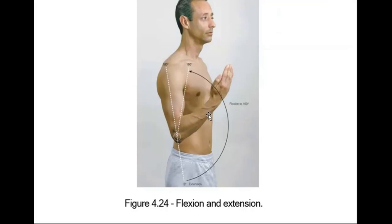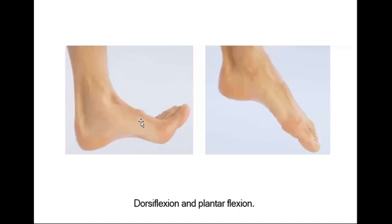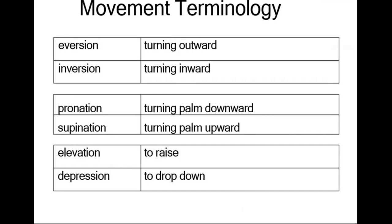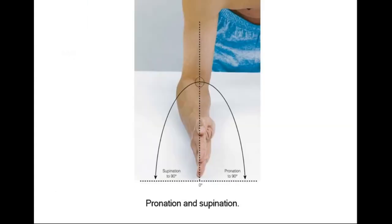For example, at the knee and cubital joint: flexion and extension. Dorsiflexion and plantar flexion in the foot are different — please remember this. Eversion is turning outward; inversion is turning inward. Pronation and supination: pronation is turning the palm downward, supination is turning the palm upward. Elevation means to raise; depression means to drop down.